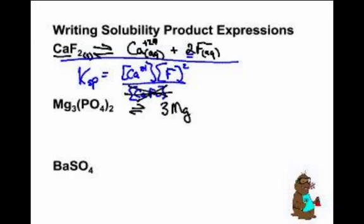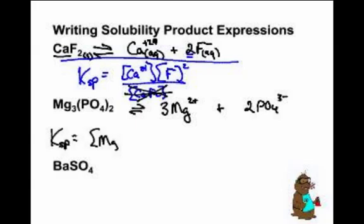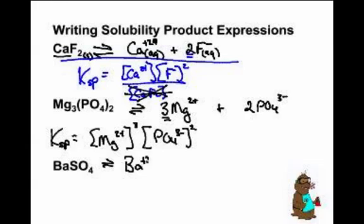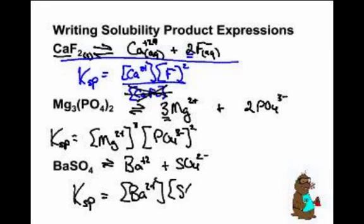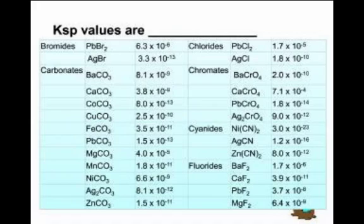The second example is magnesium phosphate. It would break into three magnesiums with a 2+ charge plus two phosphates. The Ksp expression would be equal to [Mg²⁺]³ — cubed because of the three — times [PO₄³⁻]², squared because of the two. Then barium sulfate — remember, all sulfates are soluble except for barium and other varieties. This one is insoluble, so the Ksp equals [Ba²⁺][SO₄²⁻], both to the first power since this is a 1:1 ratio.